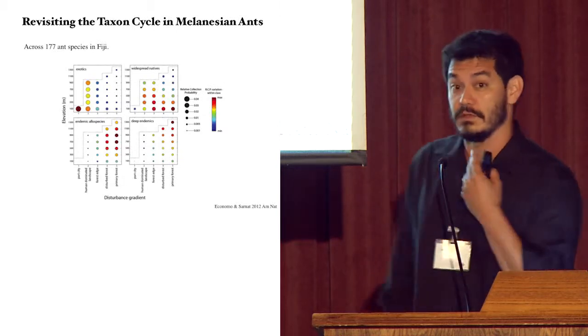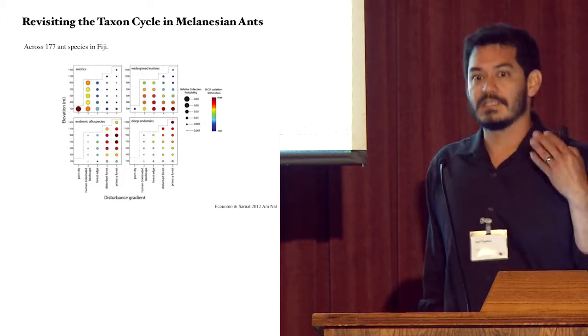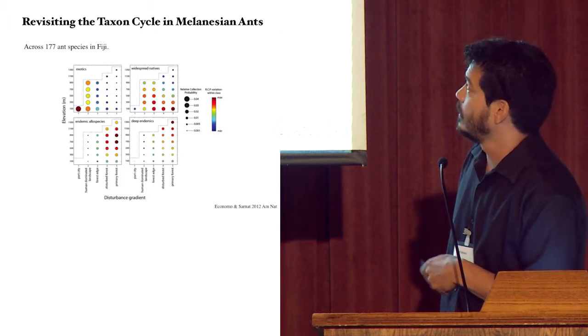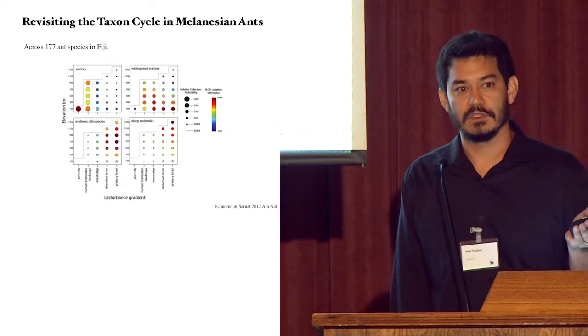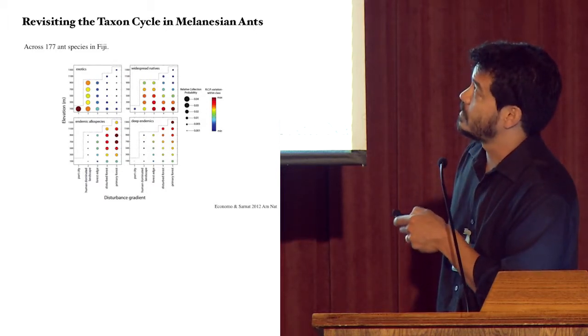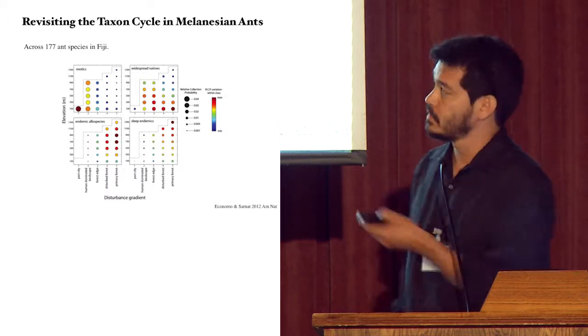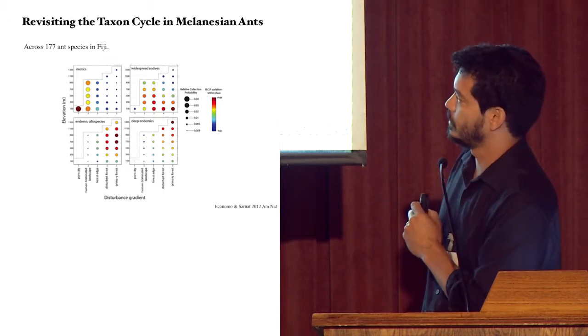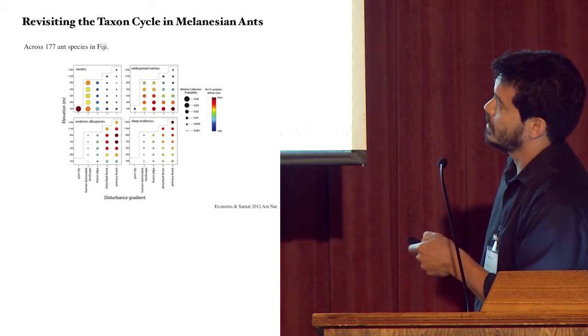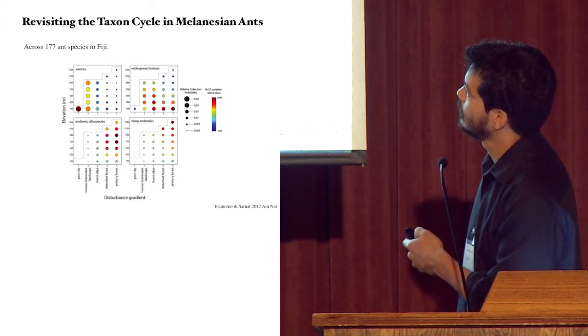So this idea of the taxon cycle was recently revisited by Evan Economo and Eli Sarnat in this paper that was published in American Naturalist in 2012. And there are lots of things that of course have changed in the past 50 years since Ed Wilson originally was looking at the ants of Melanesia. And so in this case, Economo and Sarnat looked at well over 10,000 individual specimens of ants. This is a huge data set of ants that were collected through a variety of different methods. They focused primarily on Fiji, looking at 177 ant species that occur in Fiji. And just by comparison, the number of ant species that were described for Fiji in Ed Wilson's original examination was 58. So this has increased about threefold, more than threefold since Ed Wilson's original work.